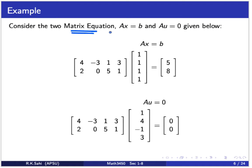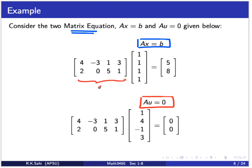We're going to consider two matrix equations: Ax = b and Ax = 0. The matrix A is the same in both. The vector x is all 1s and the vector u is (1, 4, -1, 3). When you multiply A by x, you get (5, 8), and when you multiply A by u, you get the zero vector. Instead of looking at this from a matrix point of view, we're going to look at it from the perspective of vectors — focusing on x, b, u, and 0.